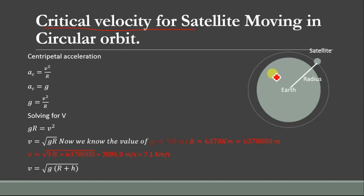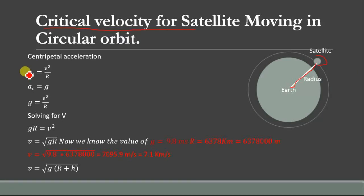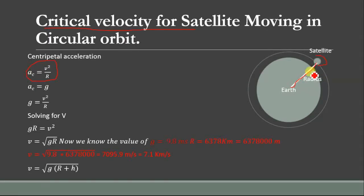Let's suppose this is the earth and this is the satellite, and the distance from the core of the earth to this satellite is equal to the radius of the earth. We have centripetal acceleration, which is the center-seeking acceleration, equal to AC = V² / R, where V is the velocity of the satellite and R is the radius from the core of the earth to the satellite.